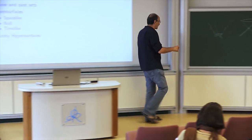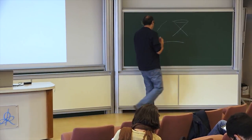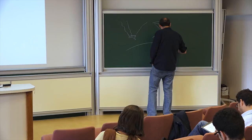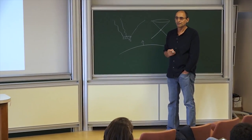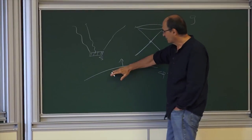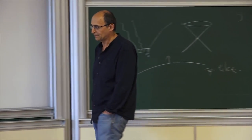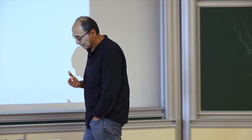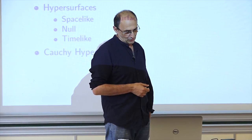Hypersurfaces: there are three types in Lorentzian geometry. Spacelike hypersurfaces are those such that the unit normal at every point is timelike, which means if you restrict the Lorentzian metric to the spacelike hypersurface, you get a Riemannian metric. So Riemannian geometry is part of Lorentzian geometry. You really have to know Riemannian geometry very well in order to do anything of interest in general relativity.